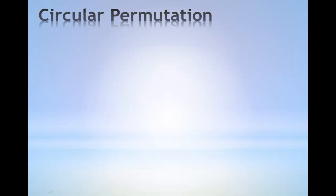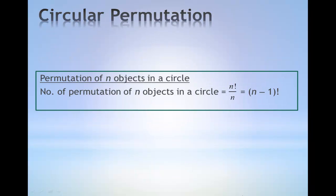Circular permutation. Permutation of n objects in a circle is given by n factorial over n which has the value of n minus 1 factorial.